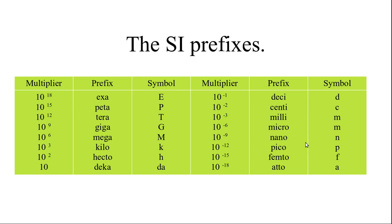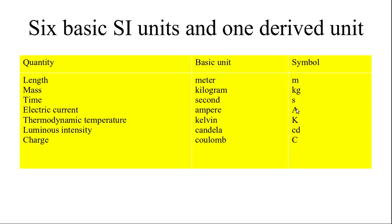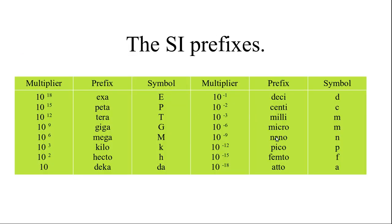Some SI unit prefixes are given here. These prefixes can be used with SI units only — you cannot use them separately. I have given the multiplier, the name of the prefix, and the symbol. In the negative multipliers, we will mostly be using: 10 to the power of minus 3, which is milli; 10 to the power of minus 6 is micro; 10 to the power of minus 9 is nano; 10 to the power of minus 12 is pico; and 10 to the power of minus 15 is femto.